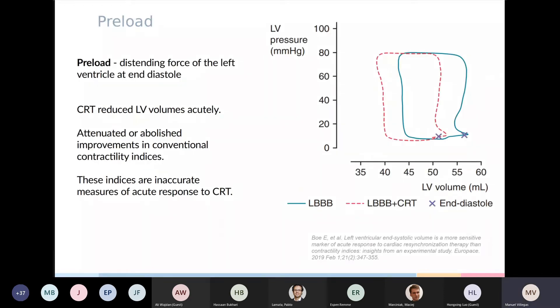The main issue that we had when we started was changes in preload during interventions. Here we define preload as the distending force of the left ventricle at the end of diastole, which is proportional to the volume at this point, and we saw that pacing reduced the left ventricular volume acutely. This reduction will then in turn attenuate or abolish any expected improvement in conventional contractility indexes, such as ejection fraction, stroke volume, stroke work, and dP/dt max. This meant that these indexes were inaccurate measures to see if there was a good response to pacing, and their values basically remained unchanged during pacing despite having a higher ventricle efficiency.